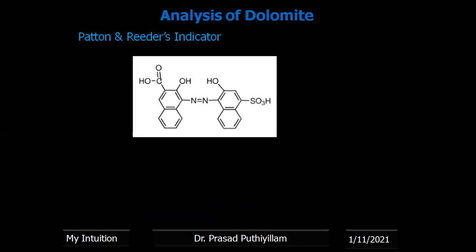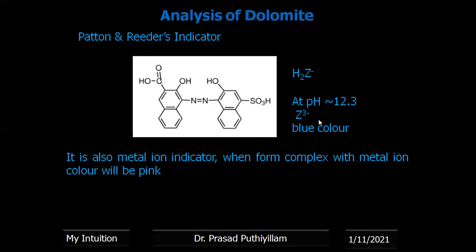Patton-Reeder's indicator is another metallochromic indicator used in complexometric titration. It can be represented as H₂Z⁻. At pH about 12.3, the protons of the hydroxyl (OH) group are removed; the remaining structure will be in the Z³⁻ form and will be blue in color. When it forms a complex with a metal ion — similar to EBT — its color will be converted to pink.